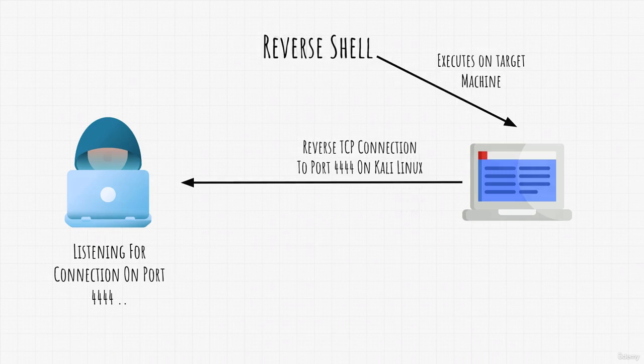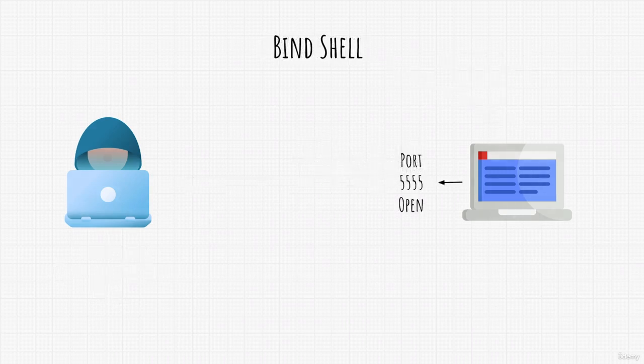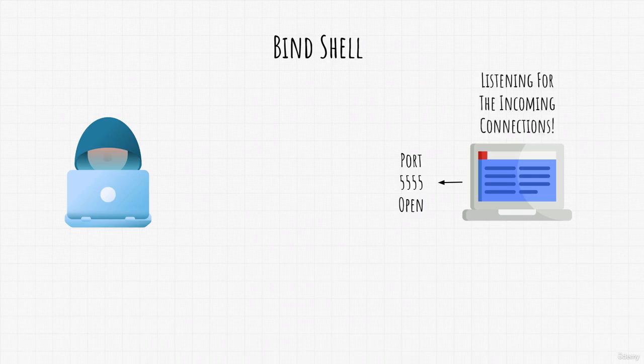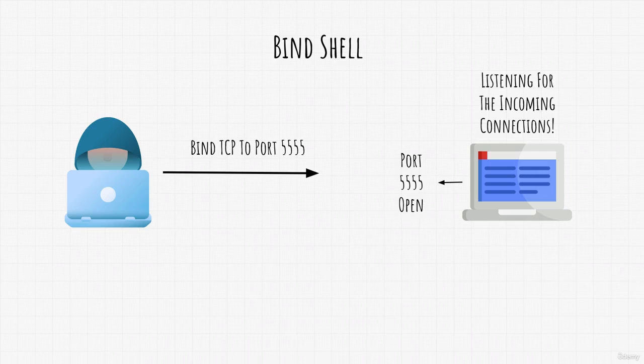On the other hand, a bind shell is when the target machine opens their port for us to connect to. In this case, it is the target machine that is listening for the incoming connection on that port, and we are the ones that must connect to that port. After we do it, we can control that target machine.